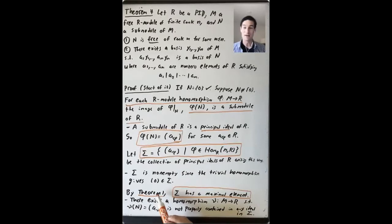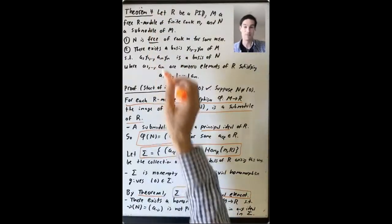So by theorem 1, from the beginning of this lecture, sigma has a maximal element under inclusion. This is the whole reason why we proved theorem 1 at this point in section 12.1, because we need to apply this particular part of it for the proof of theorem 4.